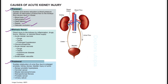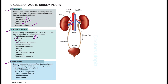The second type is intrinsic renal — direct injury to the kidneys by inflammation, drugs, toxins, infections, or reduced blood supply. The most important cause is acute tubular necrosis, which can happen due to drugs, toxins, or prolonged hypotension. All types of glomerulonephritis also fall under intrinsic renal, including those due to autoimmune disease, infection, or small vessel vasculitis such as HUS or TTP.